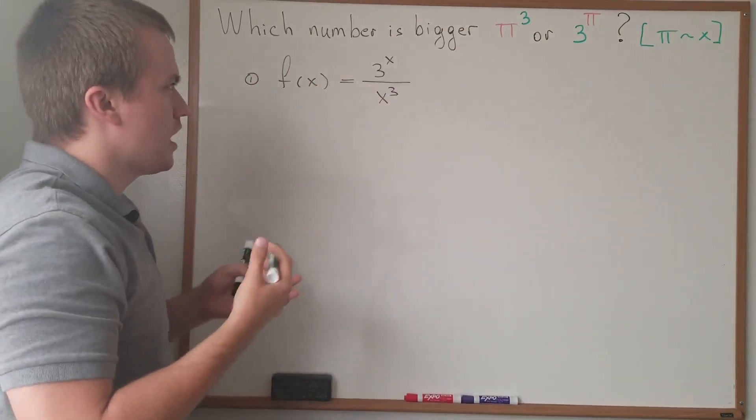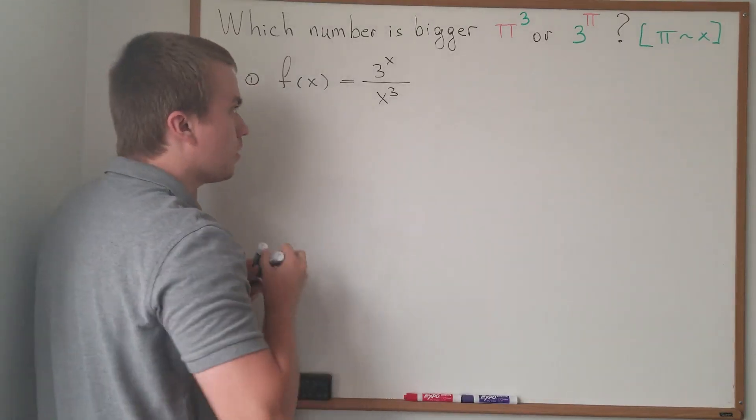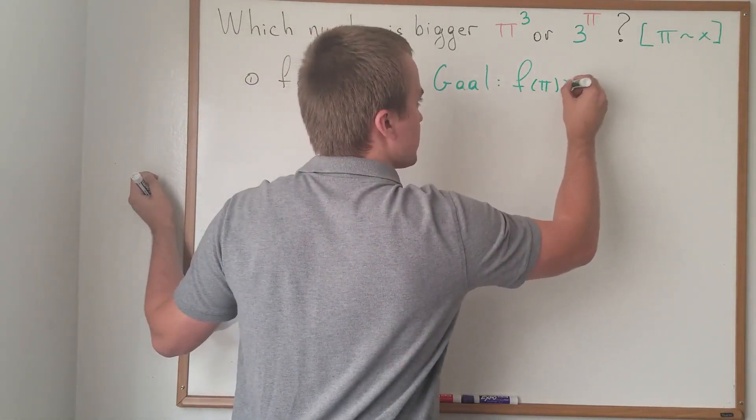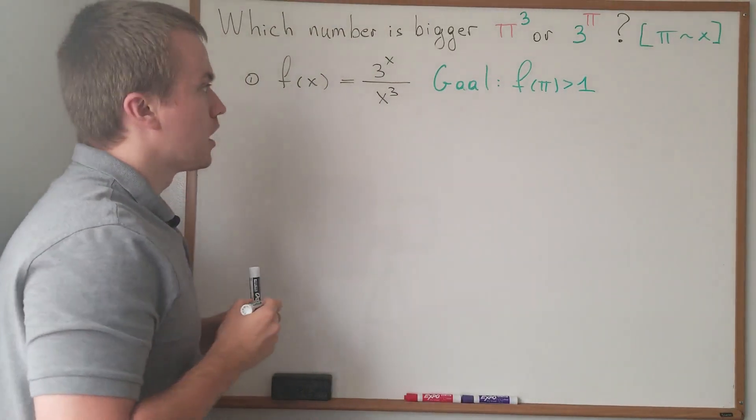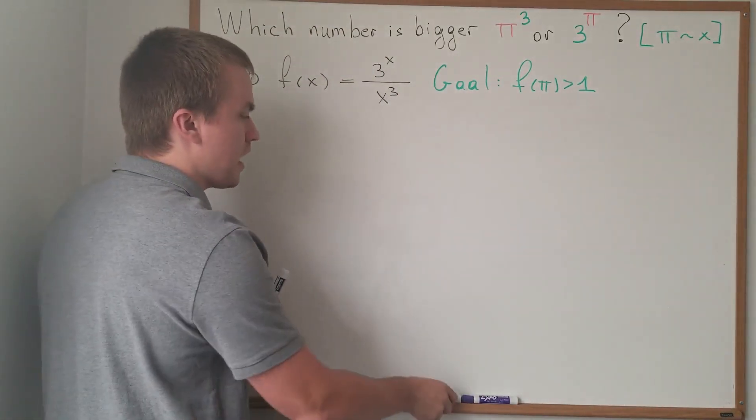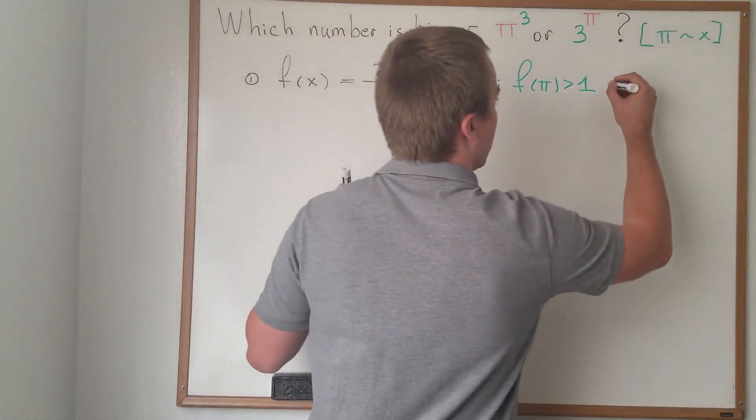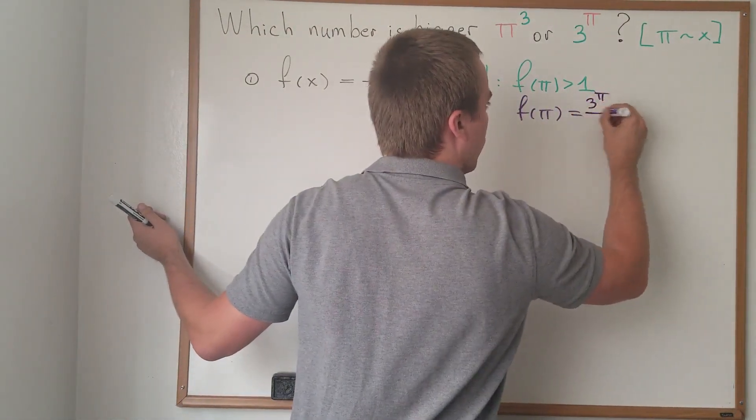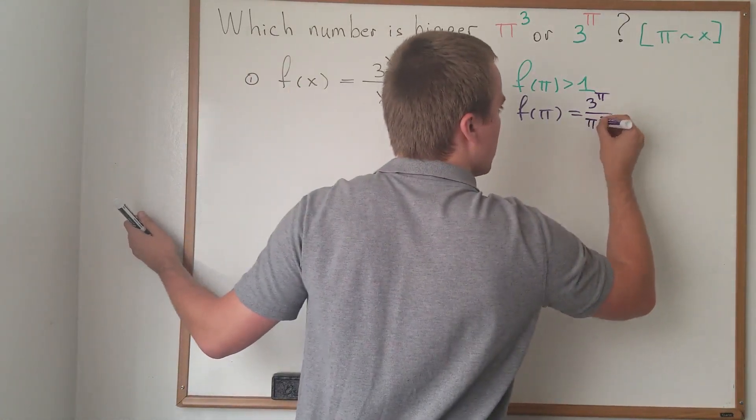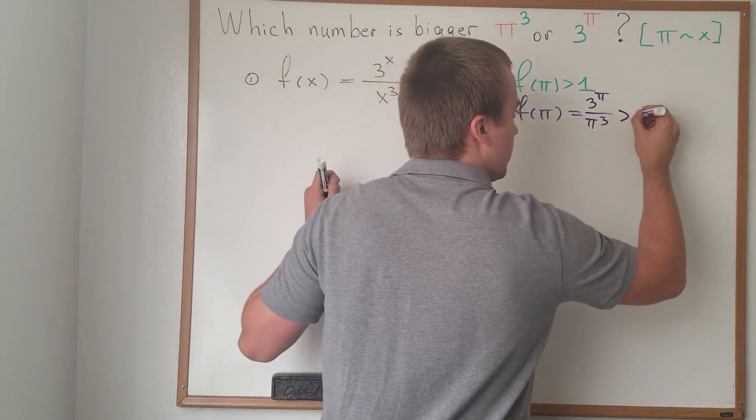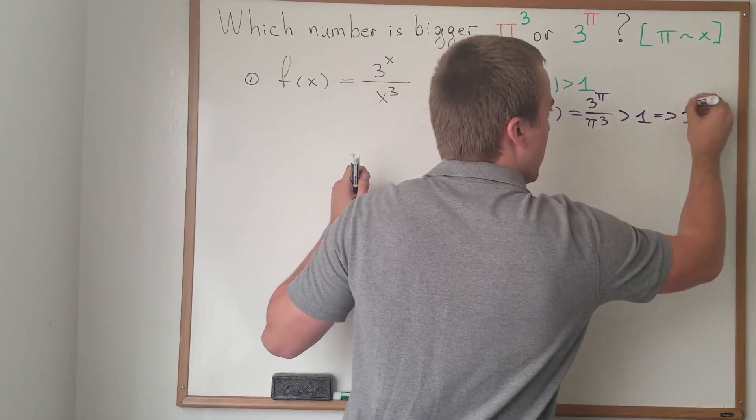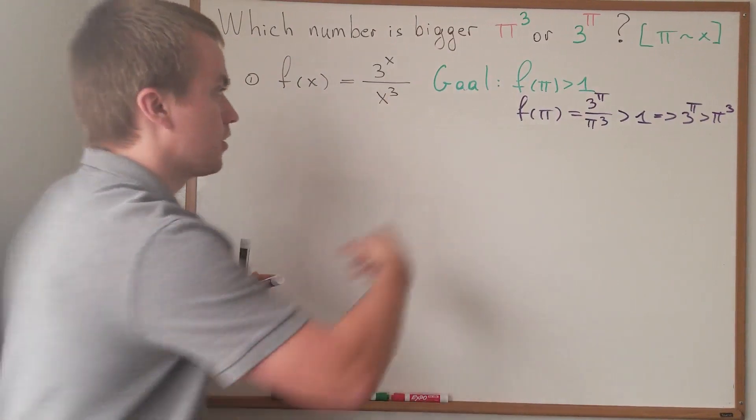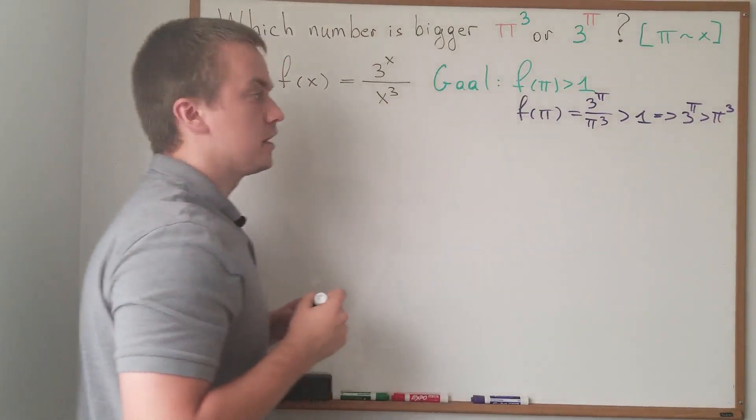And then you're going to ask me, why am I doing this? And my goal is to show that f(π) is going to be bigger than 1. Why is this important? Because if I'm going to show that f(π) is bigger than 1, then what is my f(π)? f(π) is equal to 3 to the power of π over π to the cube. And then if I know that f(π) is bigger than 1, from here we'll follow that 3 to the π is bigger than π cubed. And we are done. So, this is our goal.